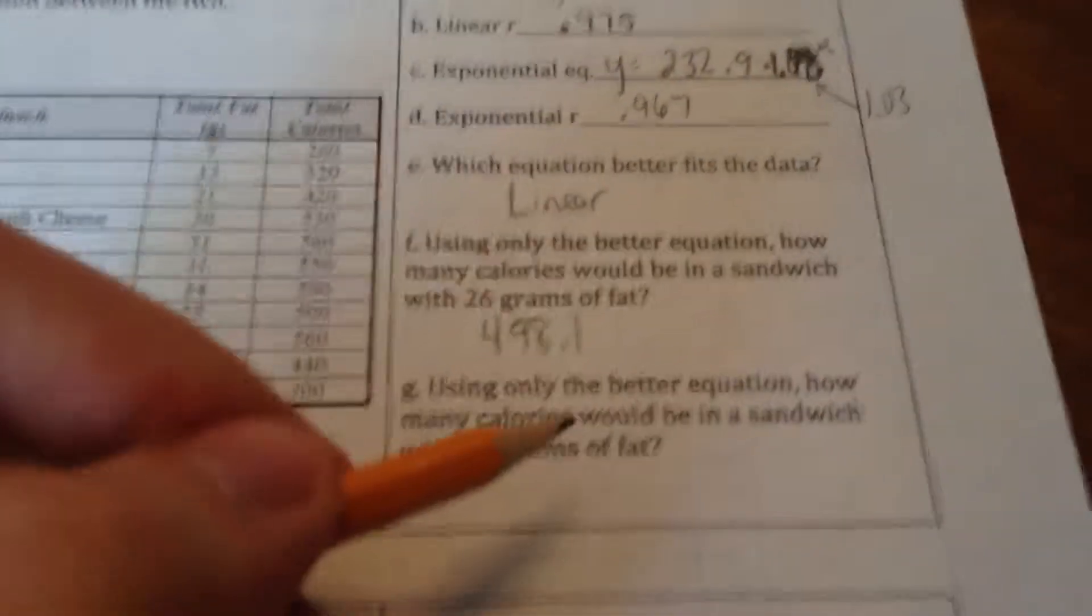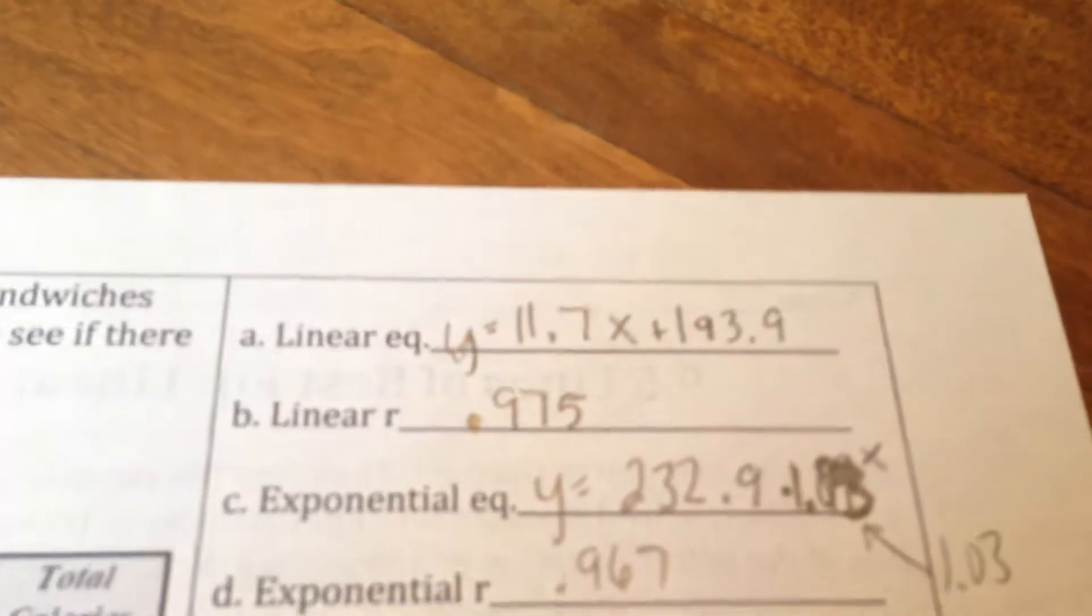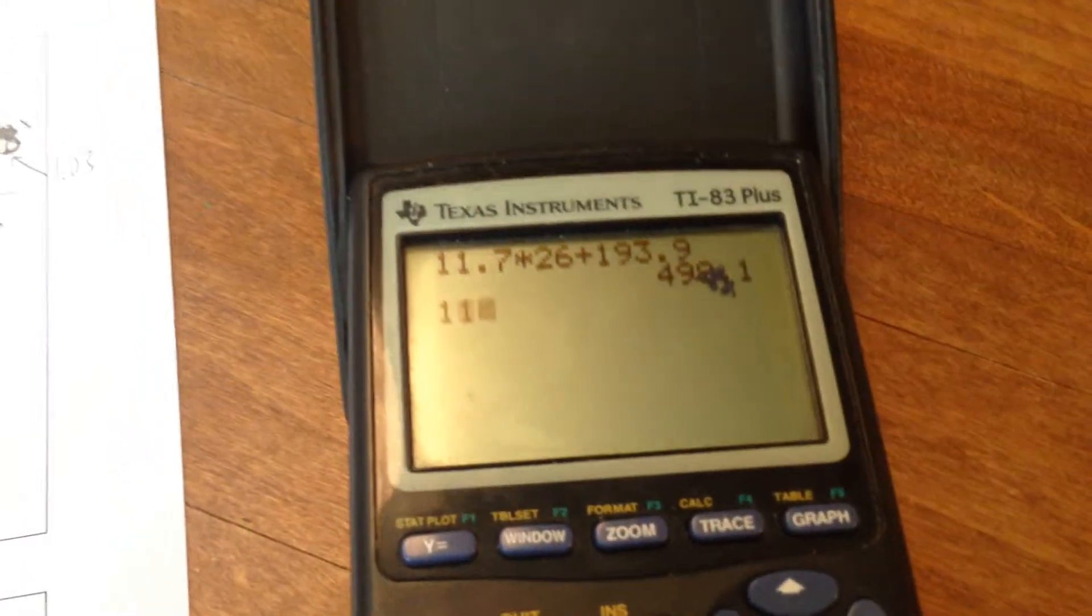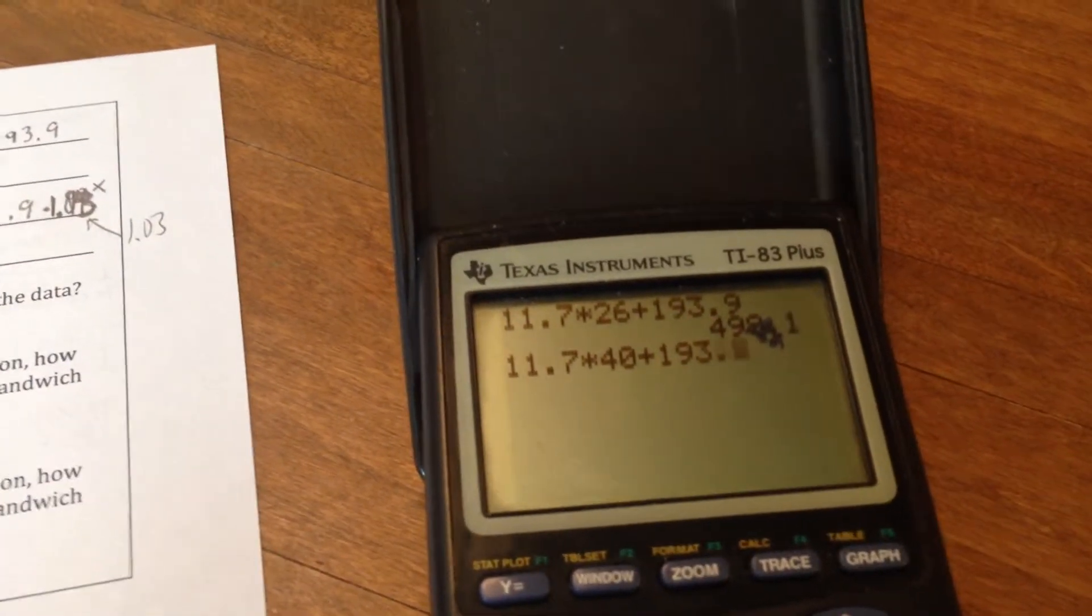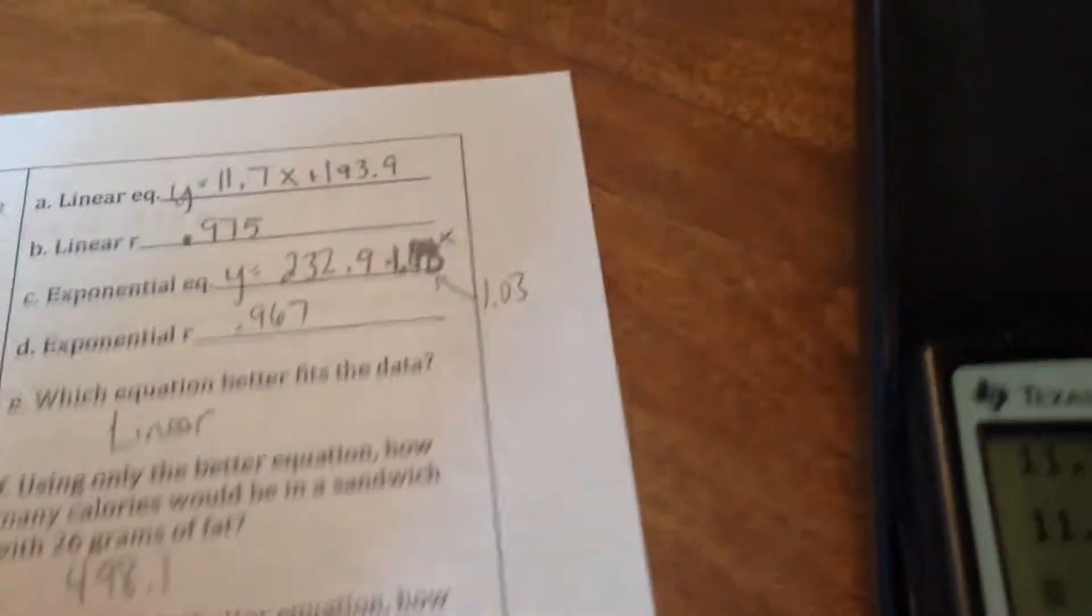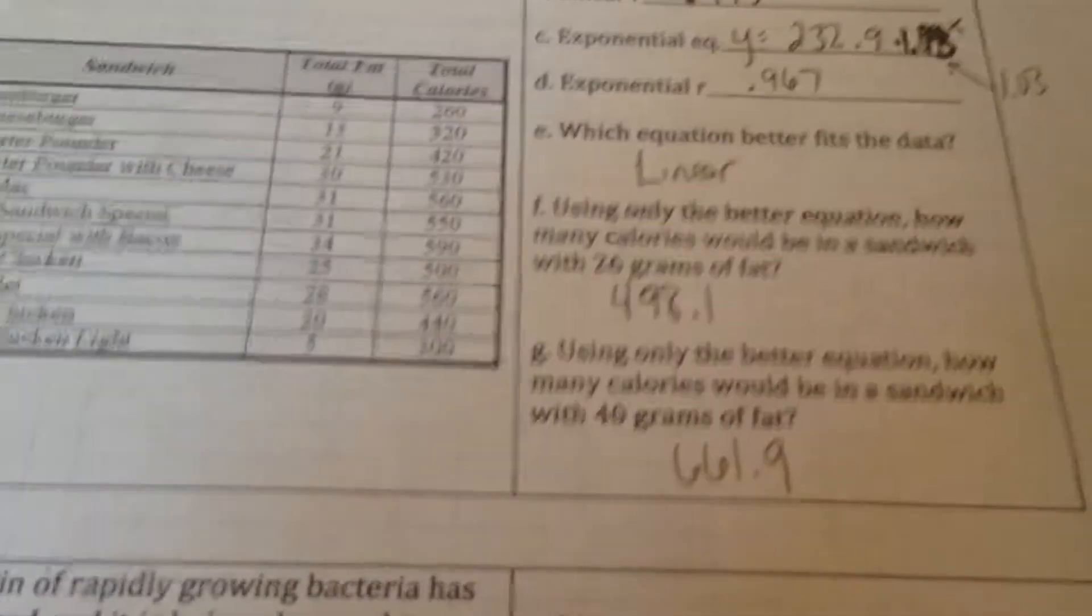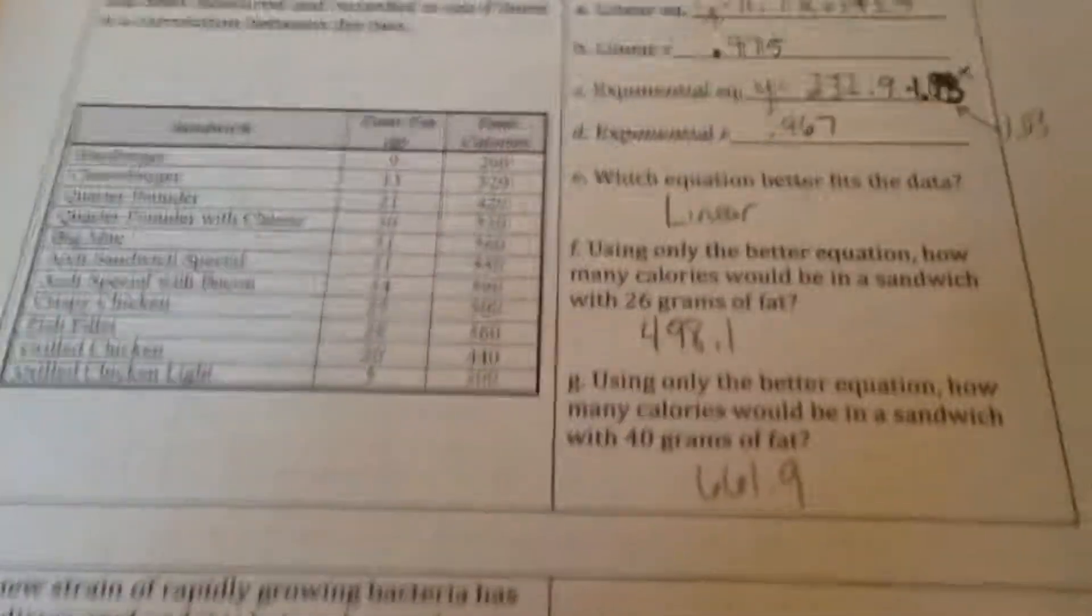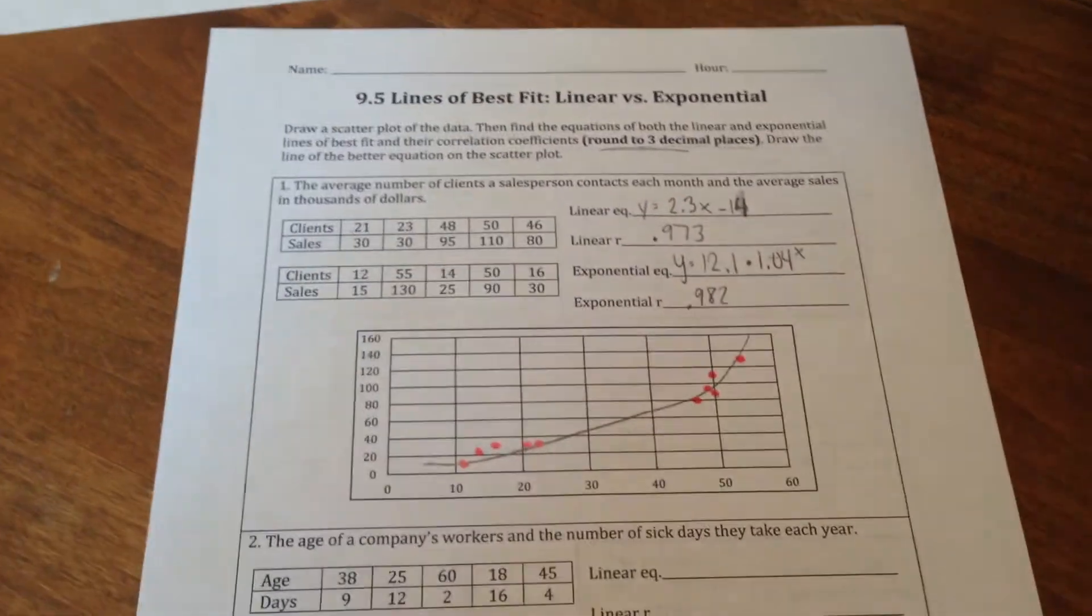Again, using the same equation, using the better equation, we're going to plug in the number 40 into that equation there where there's an X. So over here, we're going to do 11.7 times 40 plus 193.9. Push enter and we get 661.9. That's how many calories we would estimate would be in this sandwich. That's pretty much what I've got for you today. I think that you can do this one down here. And I hope that you have good luck and happy spring breakin'. So thank you.